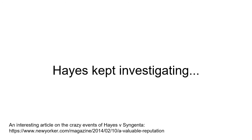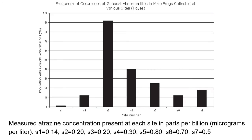Hayes got fired, but he kept investigating because he's a scientist with a curious mind — and he was brave. This New Yorker article is a pretty interesting summary of everything that happened in the Hayes versus Syngenta interaction over the course of about a decade. Hayes keeps studying; he's still working at Berkeley, no longer funded by Syngenta, just working through his own lab. We're now looking at the frequency of gonadal abnormalities in male frogs collected at various field sites. The sites are not arranged in order of atrazine concentration — they may be numbered by location or when they were sampled.